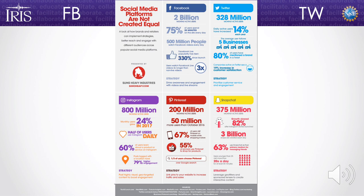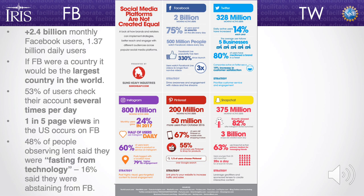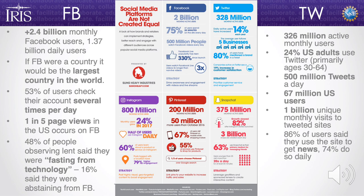A few facts about social media — I'll focus on Facebook and Twitter. Facebook has about 2.4 billion monthly users and 1.4 billion daily users; if it were a country, it would be the largest in the world. 53% of users check their account several times a day, and one in five page views on the internet occurs on Facebook. As for Twitter: about 326 million active monthly users, 24% of US adults use Twitter — primarily ages 30 to 64. There are more than 500 million tweets a day, 67 million US users, and 1 billion unique monthly visits to tweeted sites. 86% of users say they use Twitter to get news.